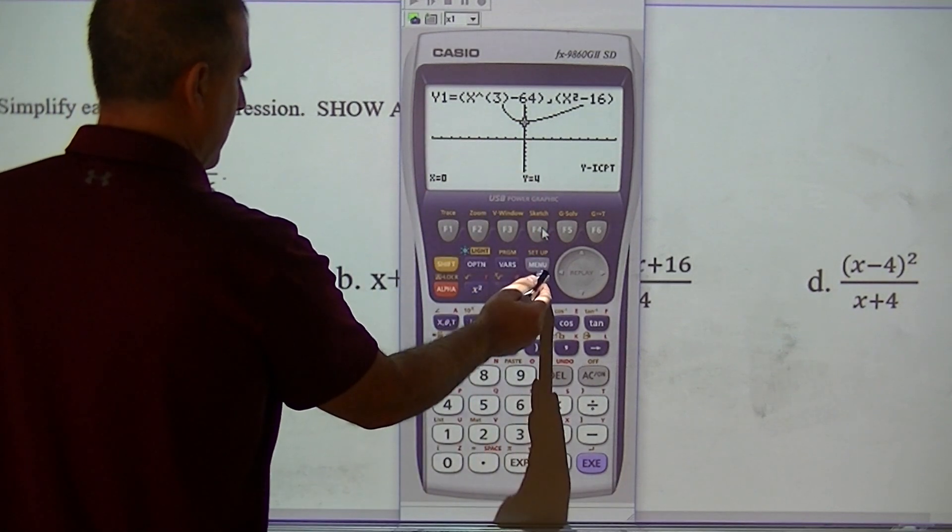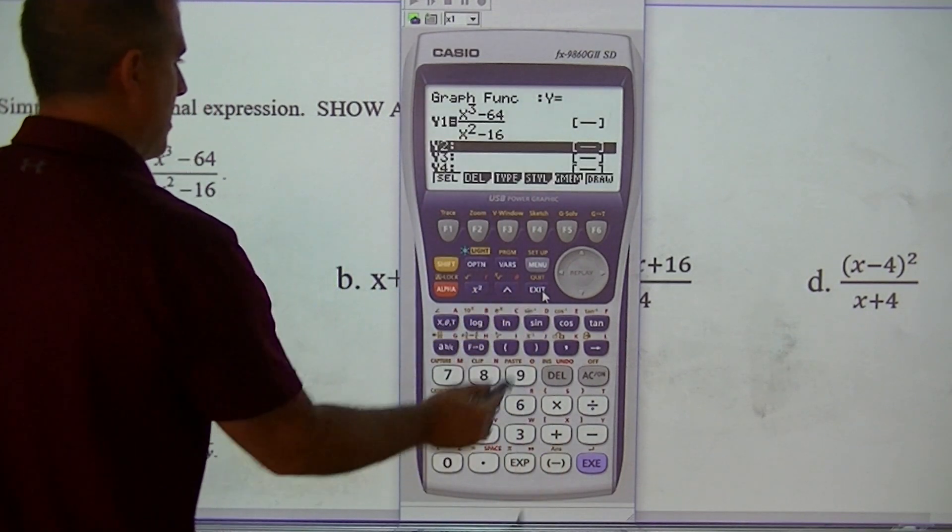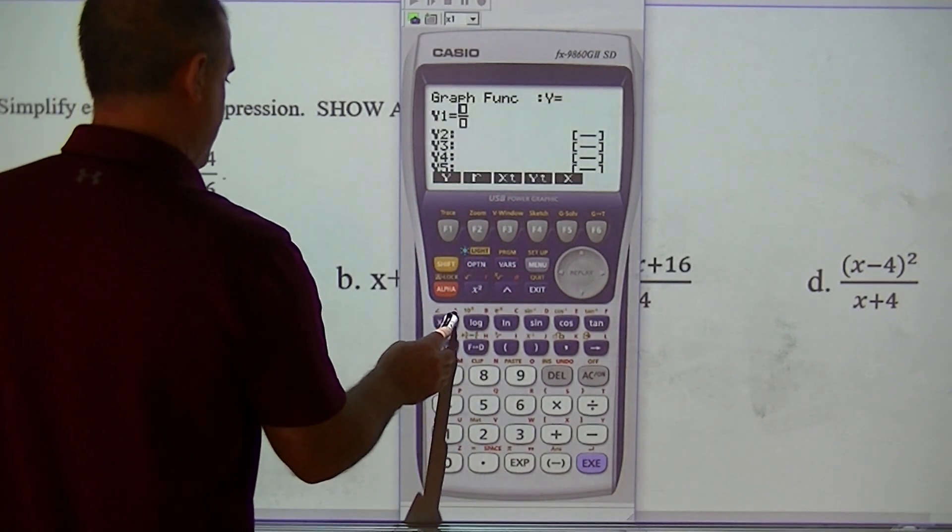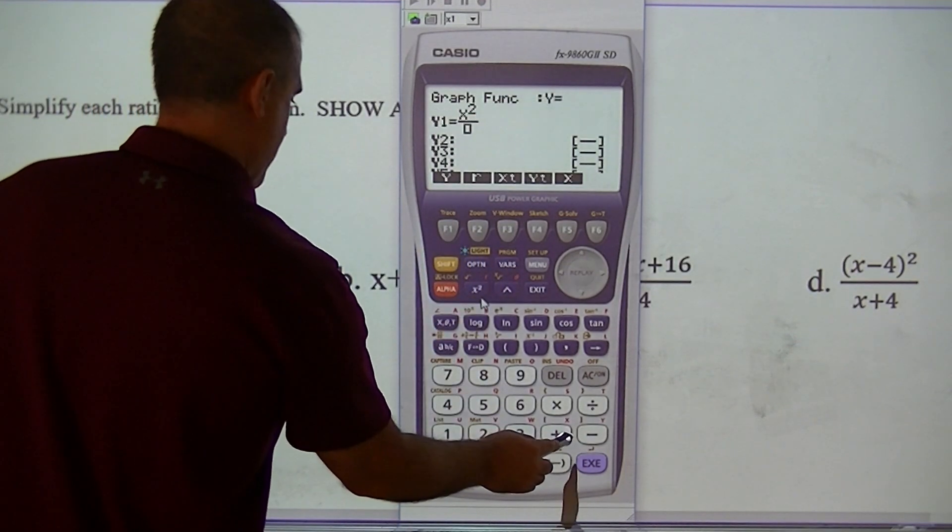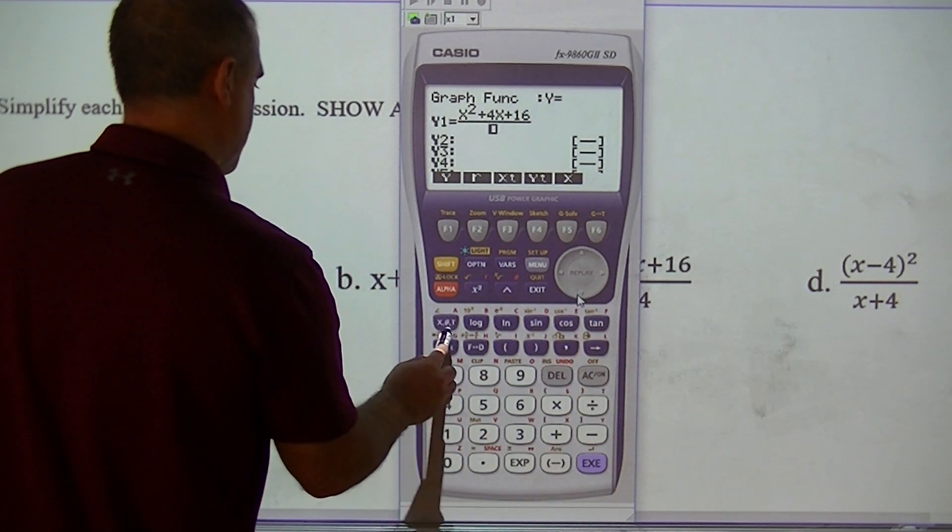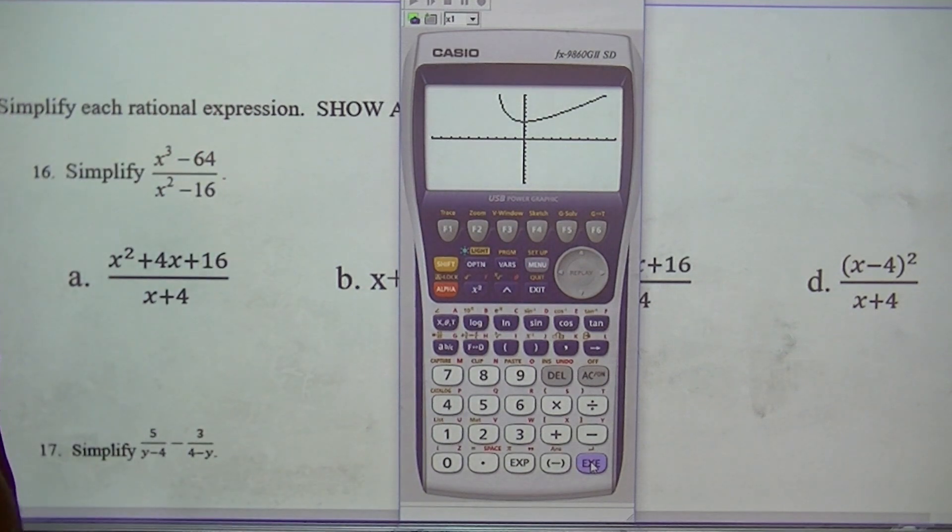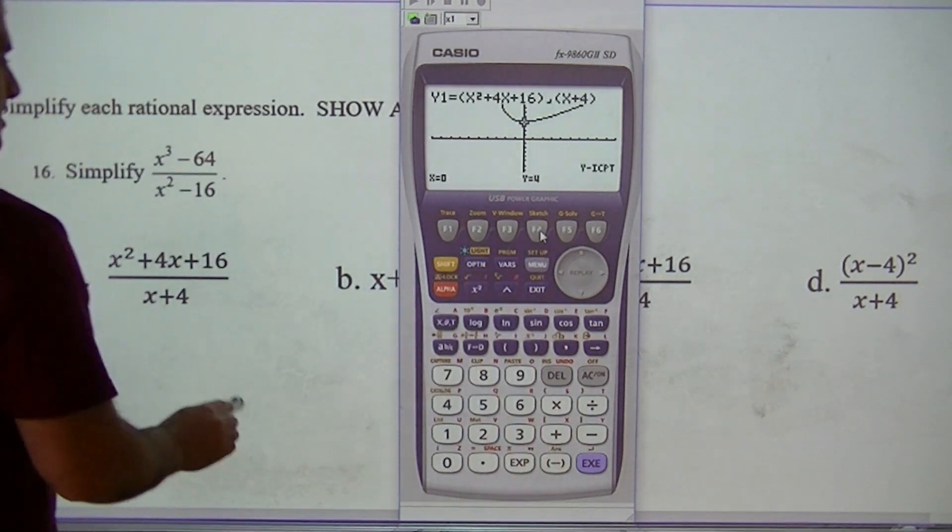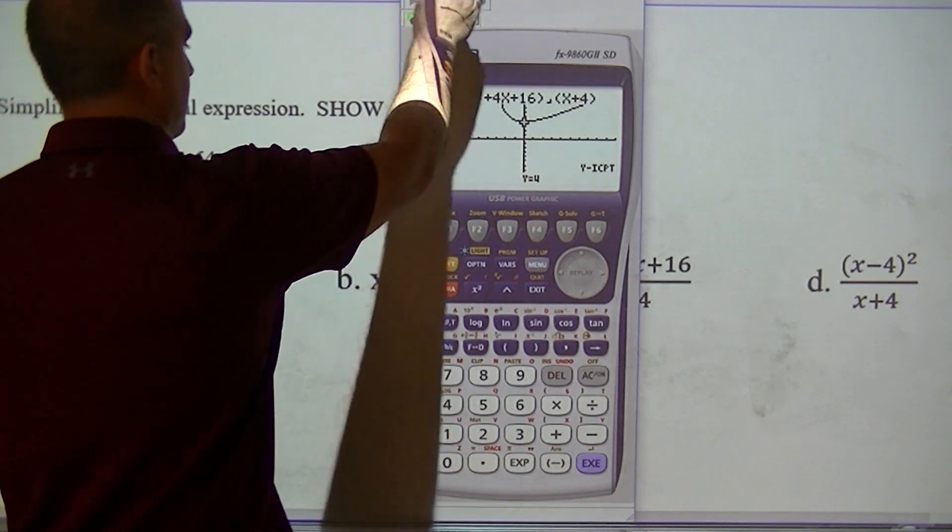So I look at the shape. I look at that being 4. Now I'm going to go through the answers. So first answer, x squared plus 4x plus 16, bottom part is x plus 4. It looks pretty close. That's pretty close. Now I'm going to check the other ones.